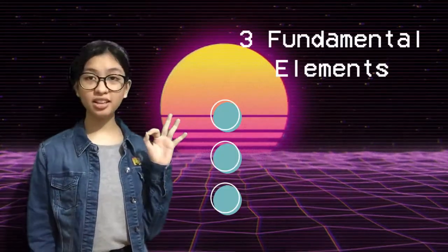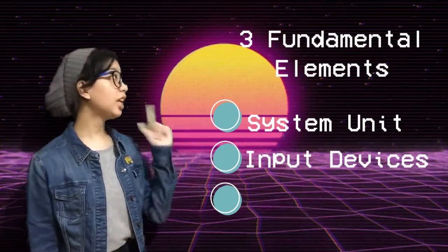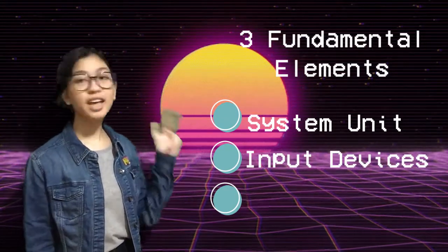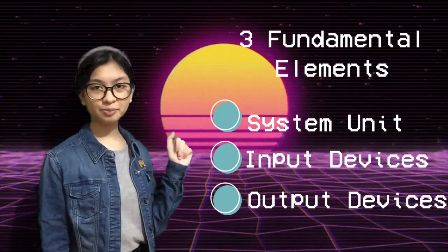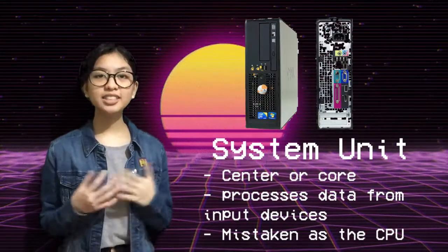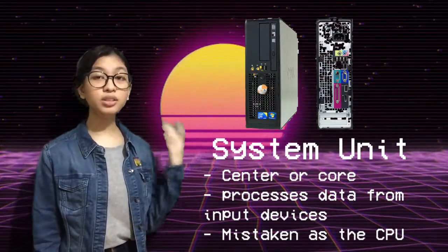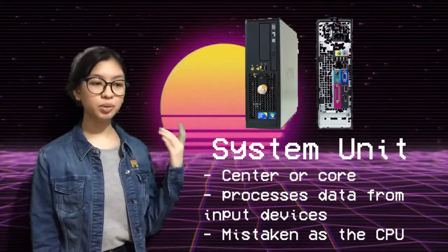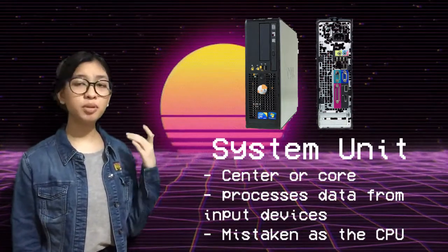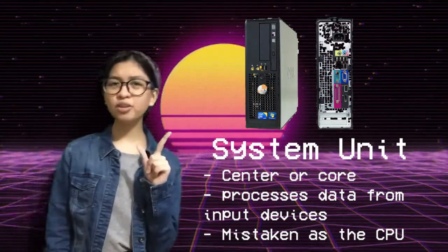A computer system has three fundamental elements: the system unit, the input devices, and the output devices. The system unit is the core or the center of the computer. It passes data from input devices and is often mistaken as the CPU.